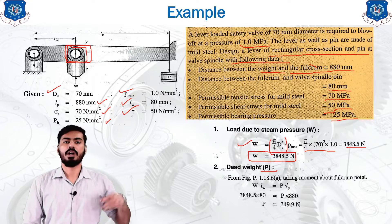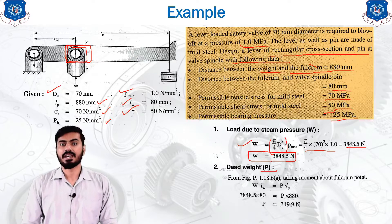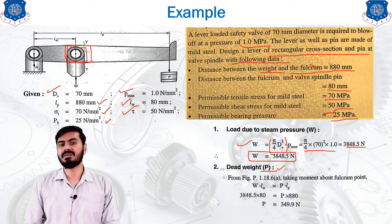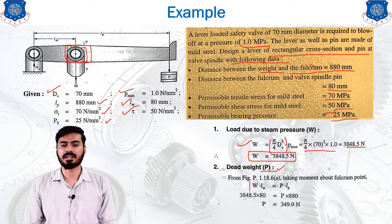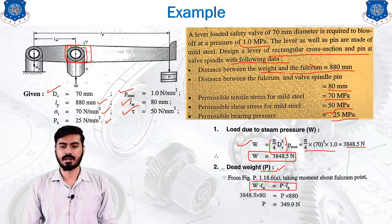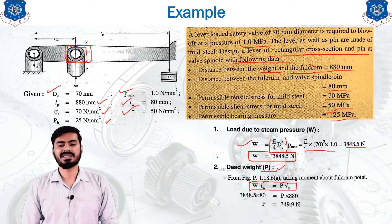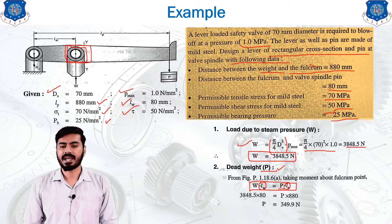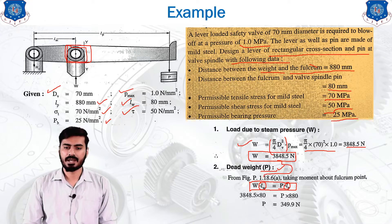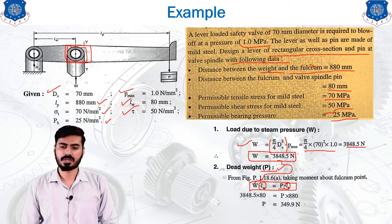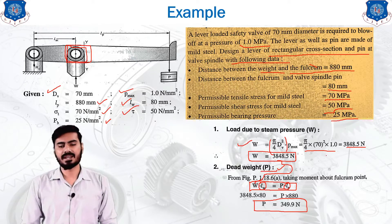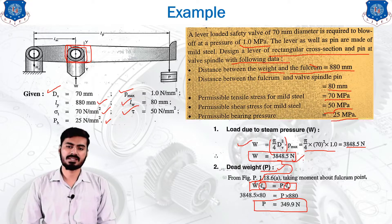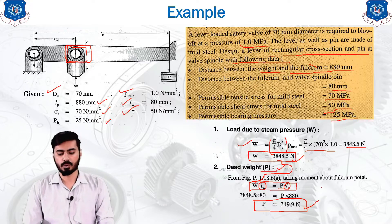From W we calculate the effort P — the dead weight required to keep the lever in its current position. If this weight is not applied, the lever will blow off below 1 mega pascal. Using the lever principle W × LW = P × LP, with LW, LP, and W all known, solving for P gives 349.9 Newton. There is a drastic difference: W is 3848.5 N and P is 349.9 N.